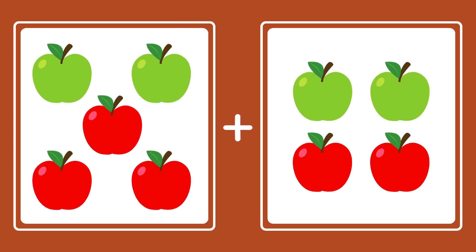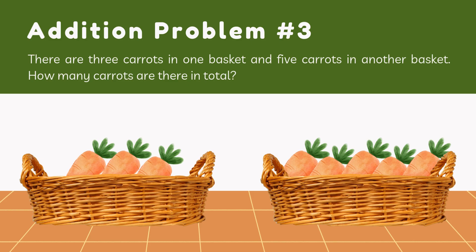Good job, you are playing it really well! Let's move to the next question. Now I have five apples on the left and four apples on the right. Can you count and tell me how many apples I have altogether? The right answer is nine apples.